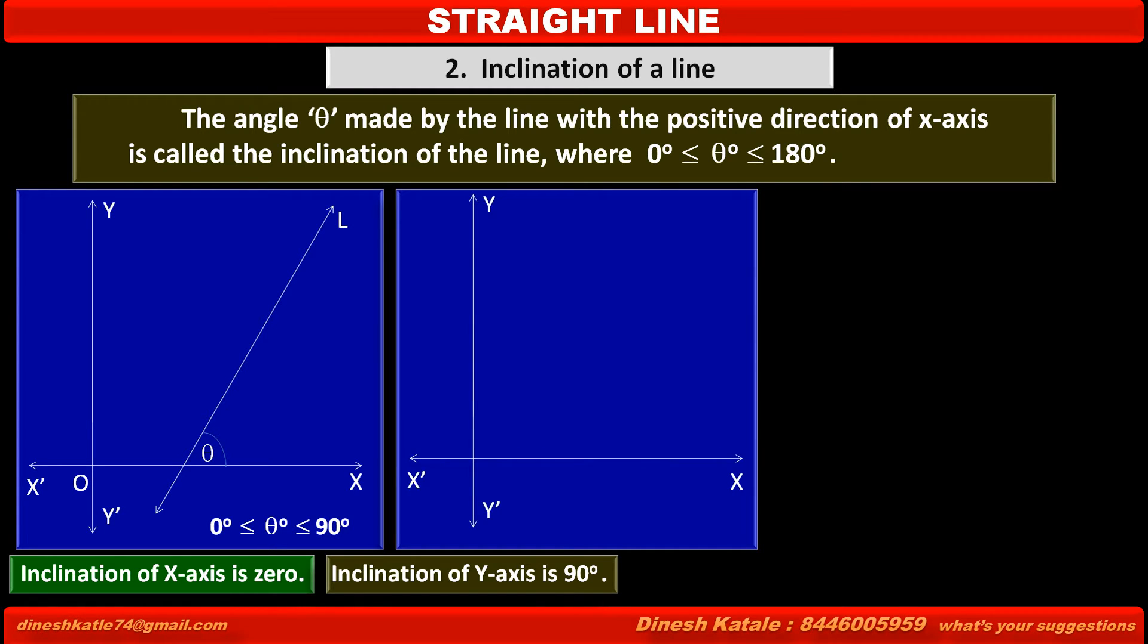In this coordinate system, line L makes an angle θ which is an obtuse angle with the positive direction of x-axis. Therefore we can write 90° ≤ θ ≤ 180°.